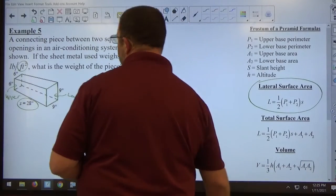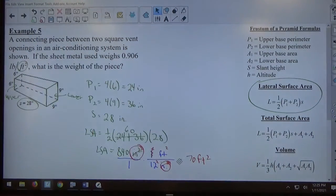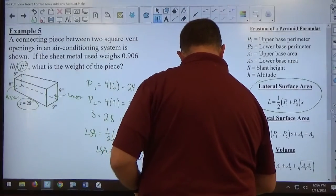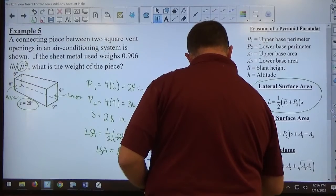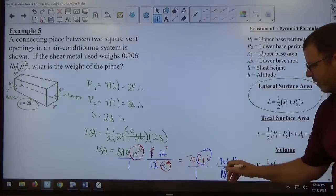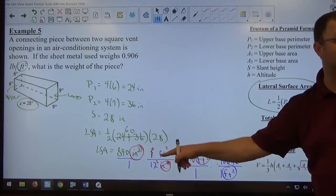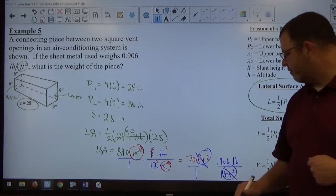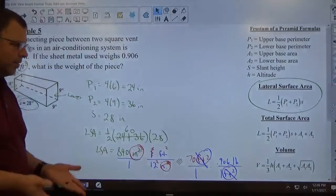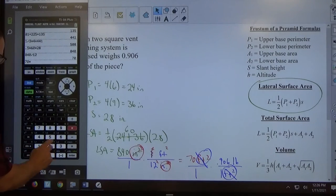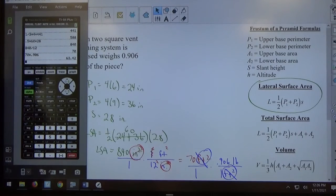of material. This sheet metal weighs 0.906 pounds per square foot. This is square feet, this is also square feet. So square feet cancels square feet, 70 times 0.906, those are both in the numerator, so we're going to be multiplying those, so 70 times 0.906 comes out to 63.42 pounds.